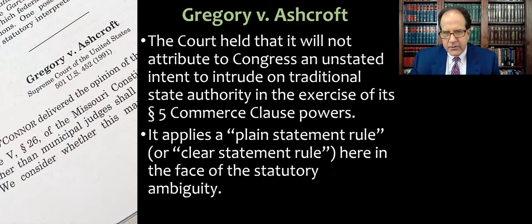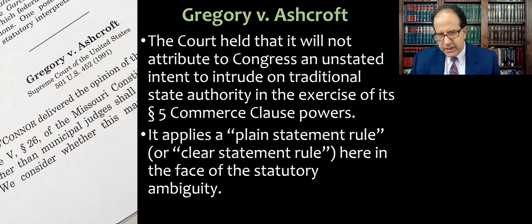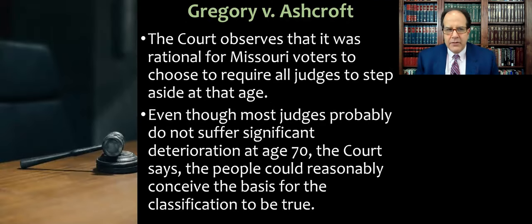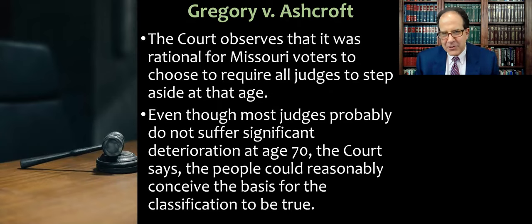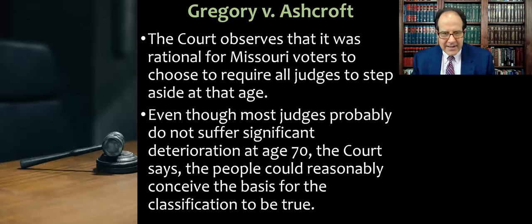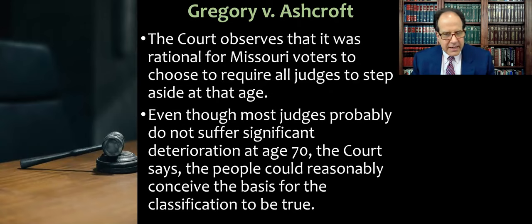The Supreme Court held that it would not attribute to Congress an unstated intent to intrude on traditional state authority in the exercise of its Article I Section 5 Commerce Clause power. It applies a plain statement rule — or clear statement rule — in the face of statutory ambiguity. The court also notes that this isn't a crazy rule — it might actually have been rational for Missouri voters to require all judges to step aside at age 70. Even though most judges probably don't suffer significant deterioration at that age, the court says people could reasonably conceive a basis for the classification to be true, giving some lip service to the will of the voters.